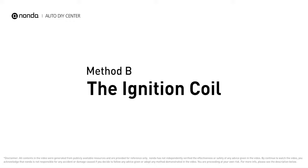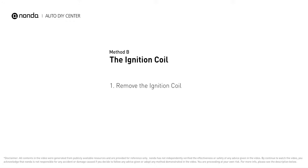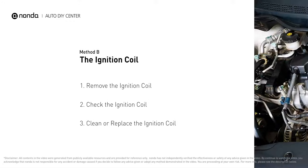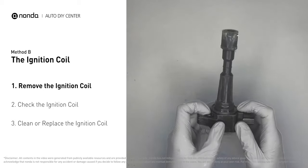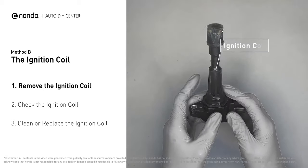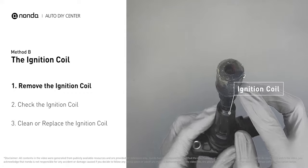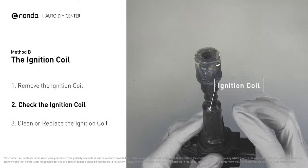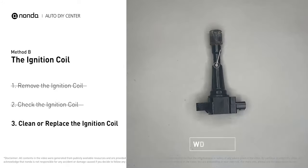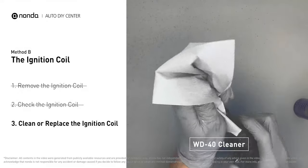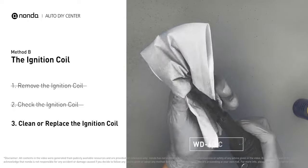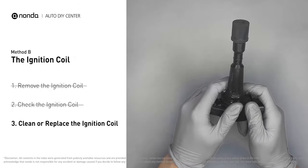Method B: the ignition coil. Ignition coils are usually installed directly at the cylinder head above the spark plug. First, carefully remove the ignition coil from the engine. Check to see if the ignition coil is either stained or damaged. If the ignition coil is covered with engine oil or stains, simply clean it with a WD-40 cleaner.